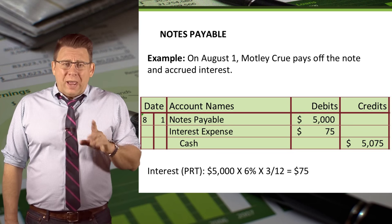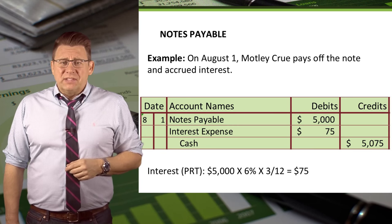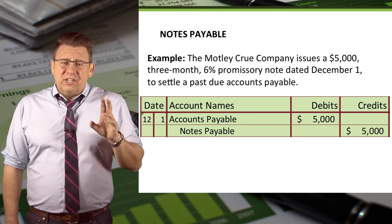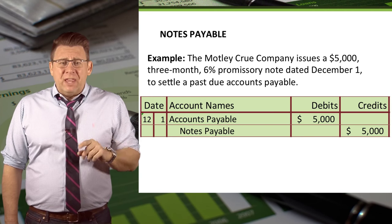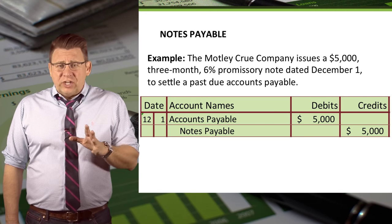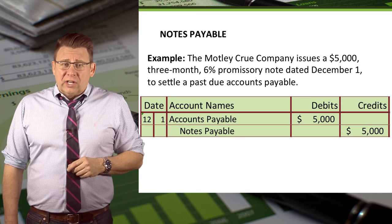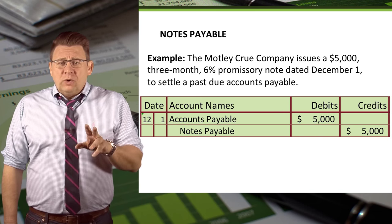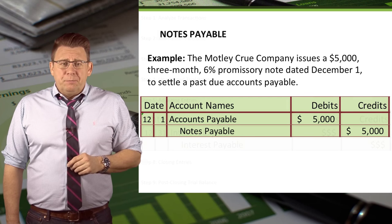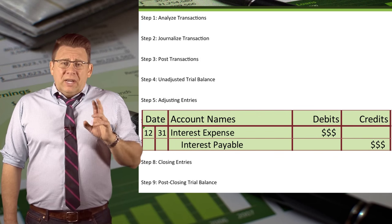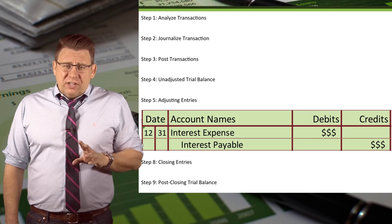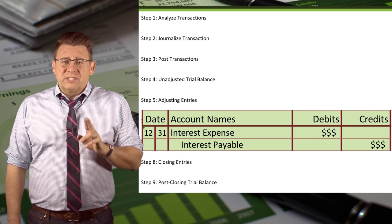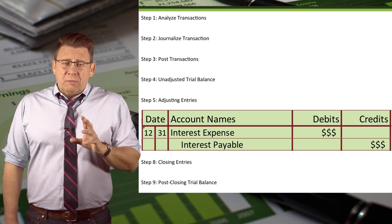So those are the basic journal entries for issuing and settling a notes payable. But let's complicate this example just a bit. Assume the transaction is dated December 1st rather than May 1st. The issuance of the note is exactly the same, but now we have to make an adjusting entry on December 31st to accrue the amount of interest expense incurred for the month of December.